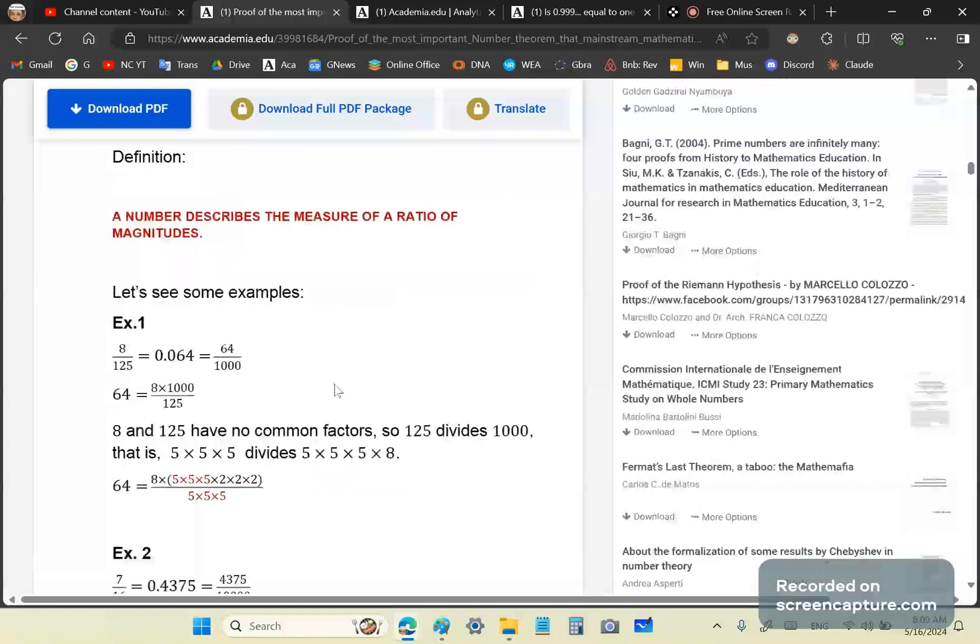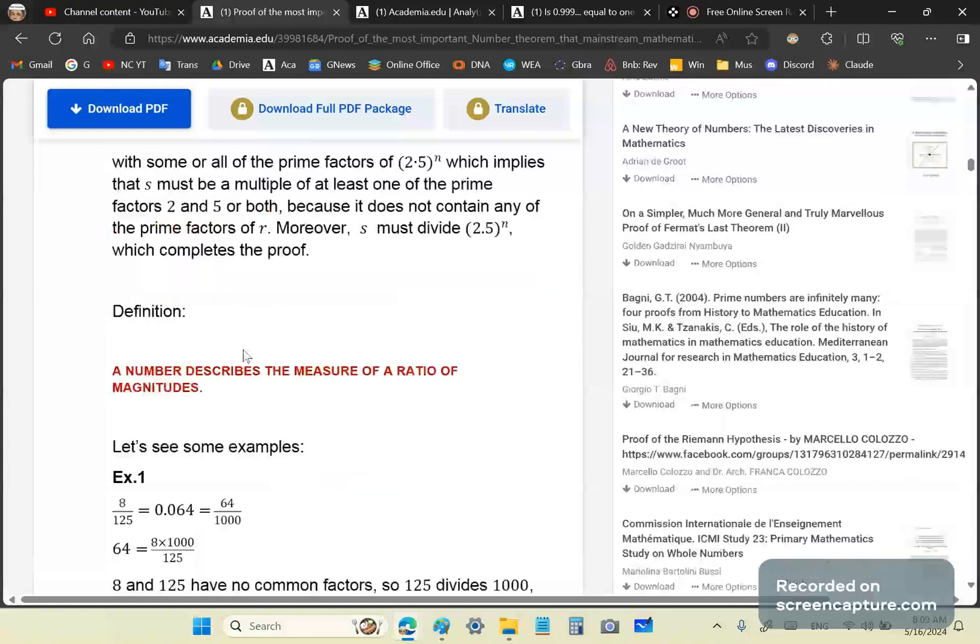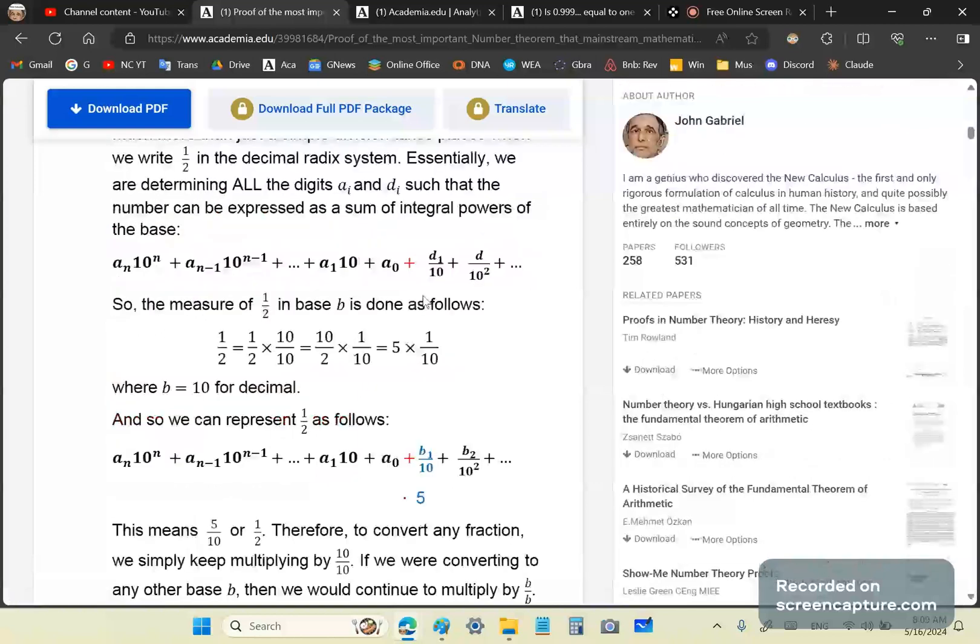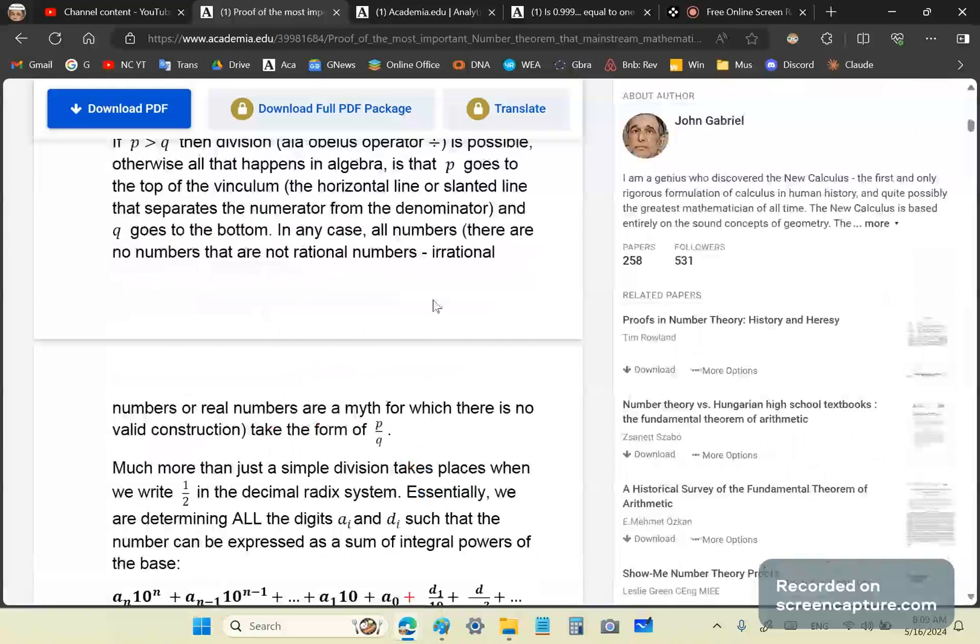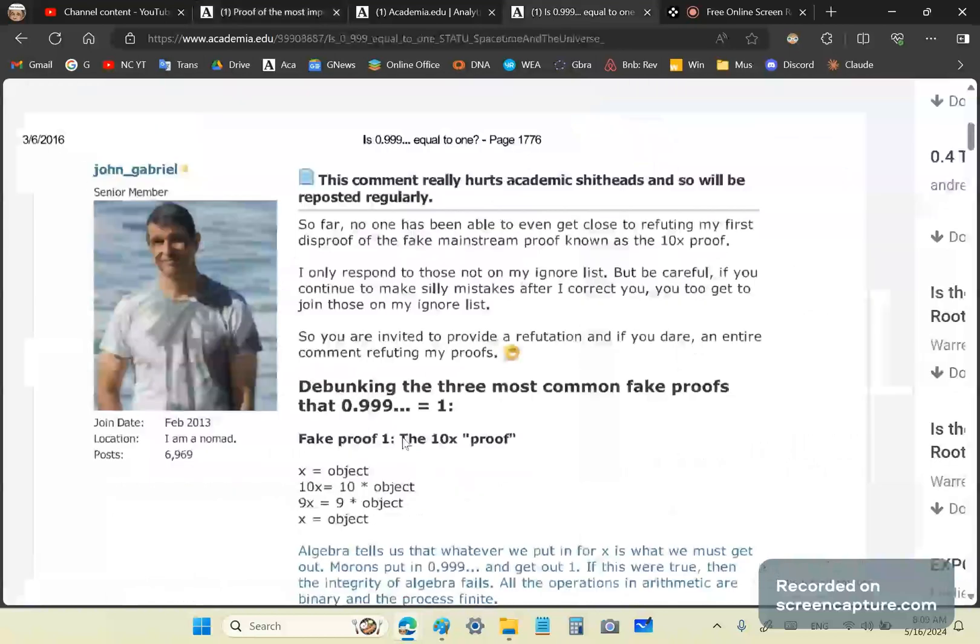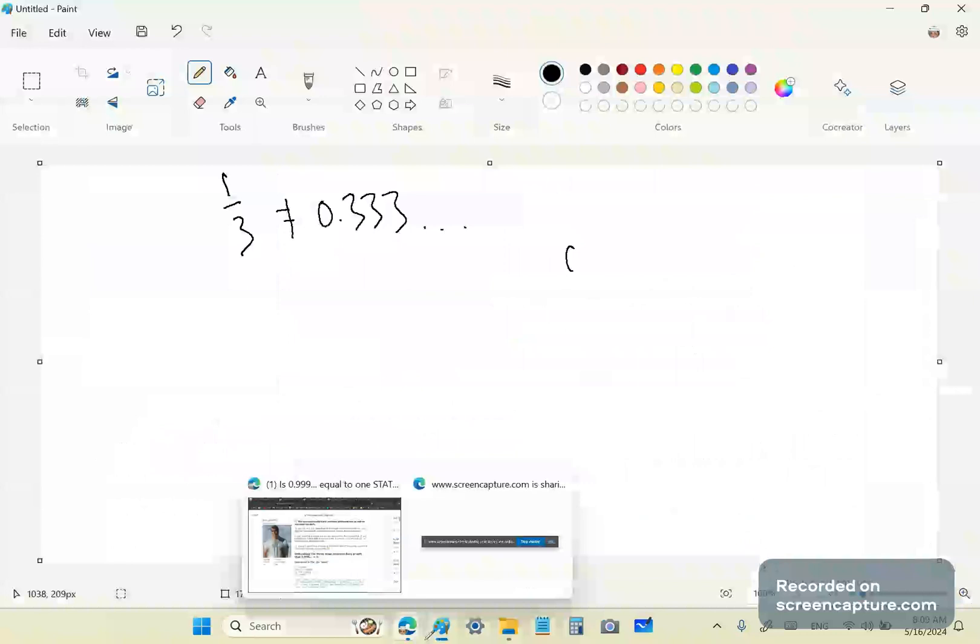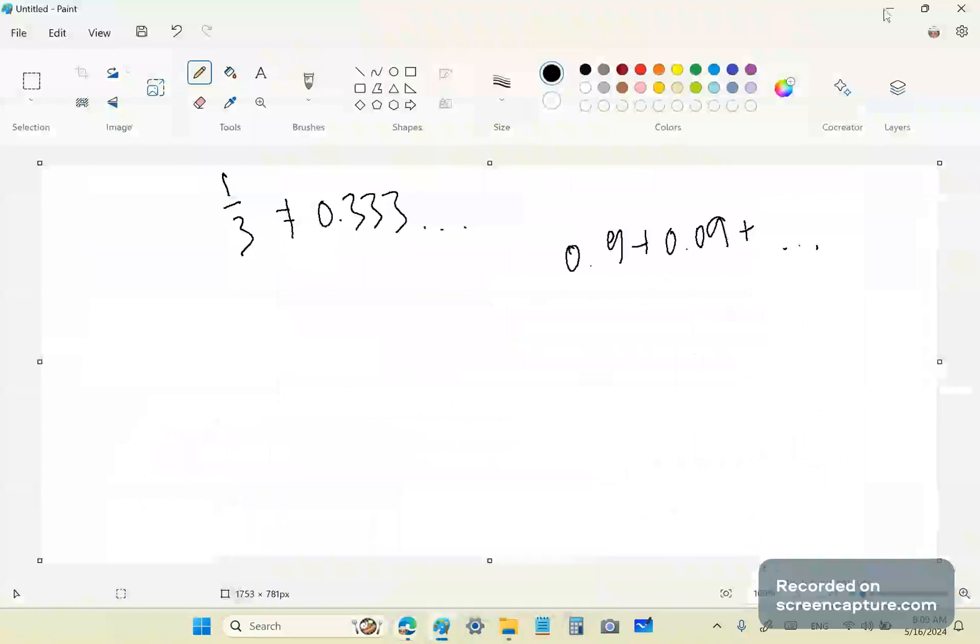So, you cannot tell me with any proof whatsoever that a third has a measure in base 10. Now, what about 0.999...? Well, what the hell is 0.999...? People don't understand. And in fact, mainstream academics go backwards and forwards. So, 0.999... is basically shorthand for the series 0.9 plus 0.09, etc. That's all it is. It's not a number. It's shorthand for a series. Very important to note that distinguishing characteristic.